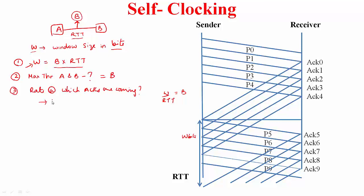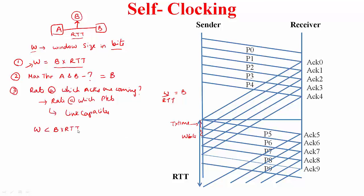The rate of ACKs equals the rate at which packets are being sent, since you generate one ACK for every packet received. The rate at which packets are sent is dictated by the link capacity. So the spacing between ACKs is dictated by the transmission time of the packets being sent. Even if W is less than the bandwidth-delay product, the rate at which you get ACKs is dictated by the link capacity.